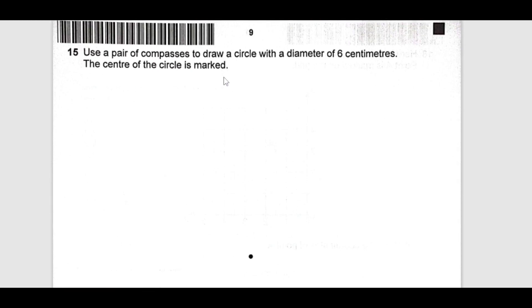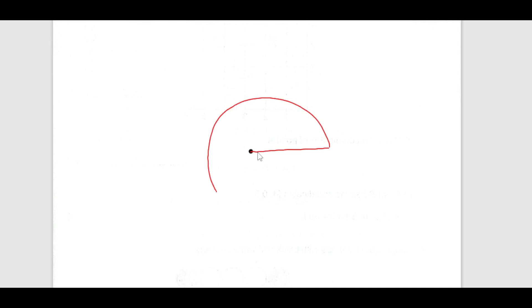Now, I use a pair of compass to draw a circle with diameter 6 centimeters, the center is marked here. What do you need to do here, you just open your compass as 6 centimeters from here. Then you just draw an angle, you must use your compass guys.